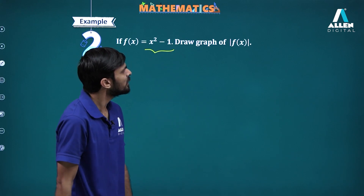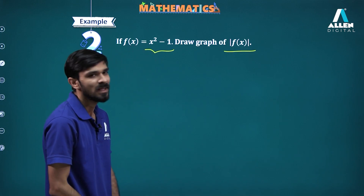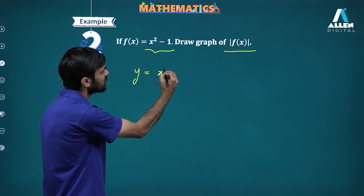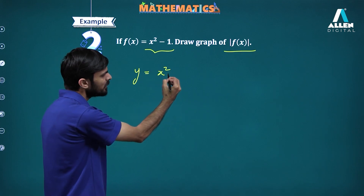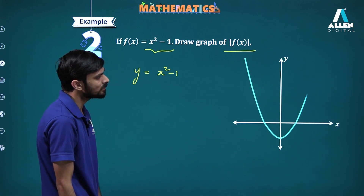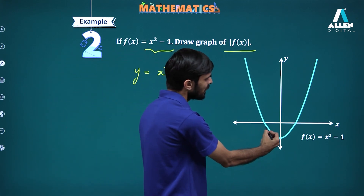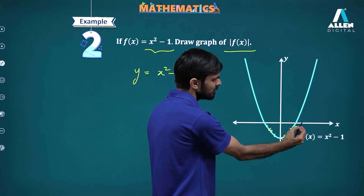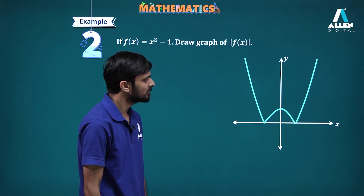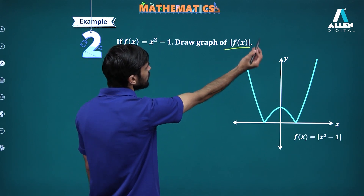For x squared minus 1, I need to draw the graph of mod of f(x). So x squared minus 1 is y equal to x squared shifted 1 unit downwards. Now if you need to take the mod of it, the portion below the x-axis needs to go and its reflection comes up above. This will be the graph of mod of x squared minus 1.